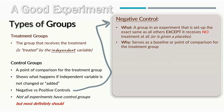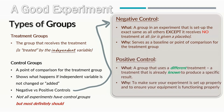The negative control group does not receive the treatment — it either doesn't receive anything or it receives what we call a placebo. The purpose of a negative control is to serve as a baseline or a point of comparison for your treatment group. Every experiment that you design in Life 102 should have at least a negative control.